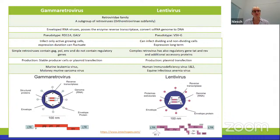Simple retroviruses contain GAG, POL, and ENV genes — GAG for structural components, POL for enzymes, and ENV for the envelope. Lentiviruses are called complex retroviruses because they also contain essential regulatory genes TAT and REV, plus additional accessory proteins. Examples of gamma retroviruses include murine leukemia virus and Moloney murine sarcoma virus. A well-known lentivirus is HIV, but equine infectious anemia virus has also been used in clinical trials.